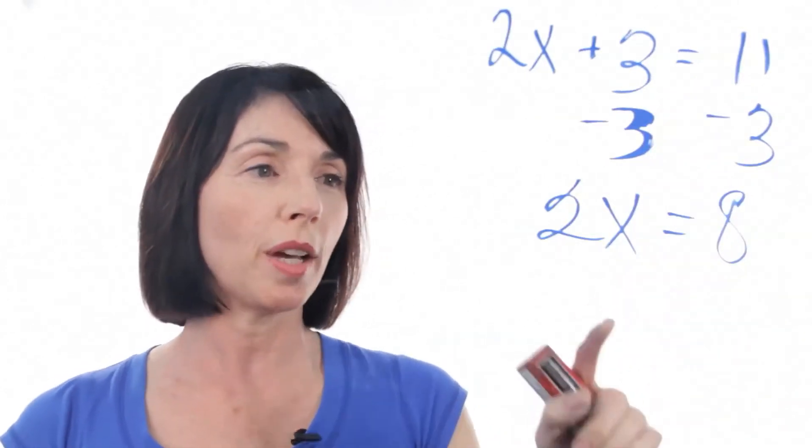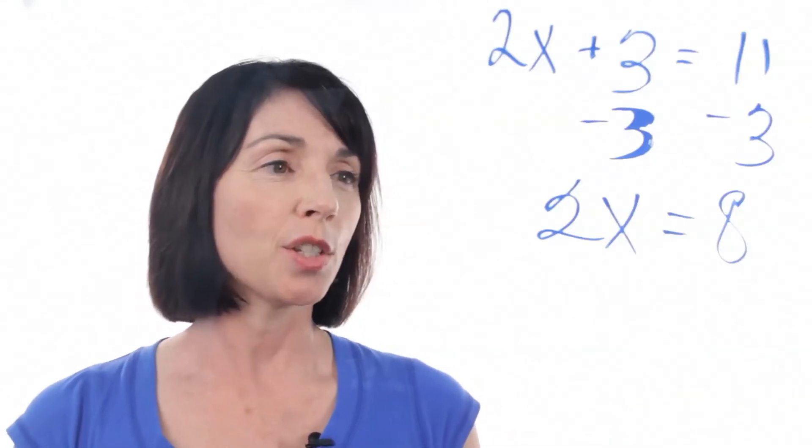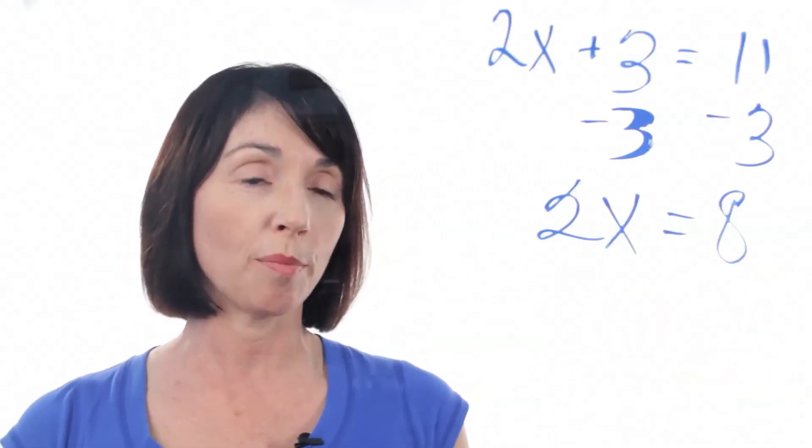Now this looks pretty good, but we've got a 2 in front of the x and we'd really rather just have a 1 in front of the x. So since we're multiplying x by 2, we're going to divide both sides of this equation by 2.